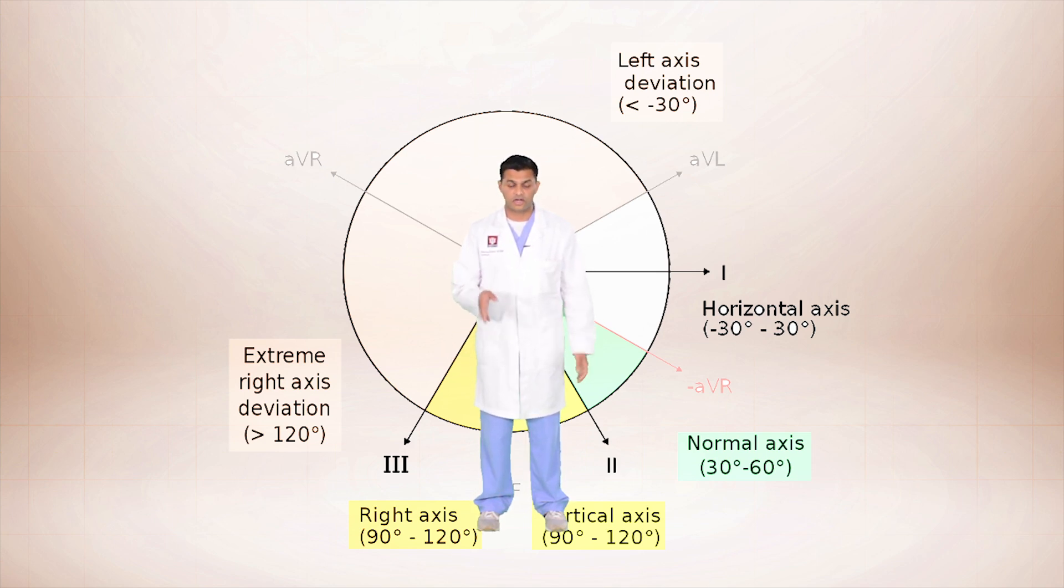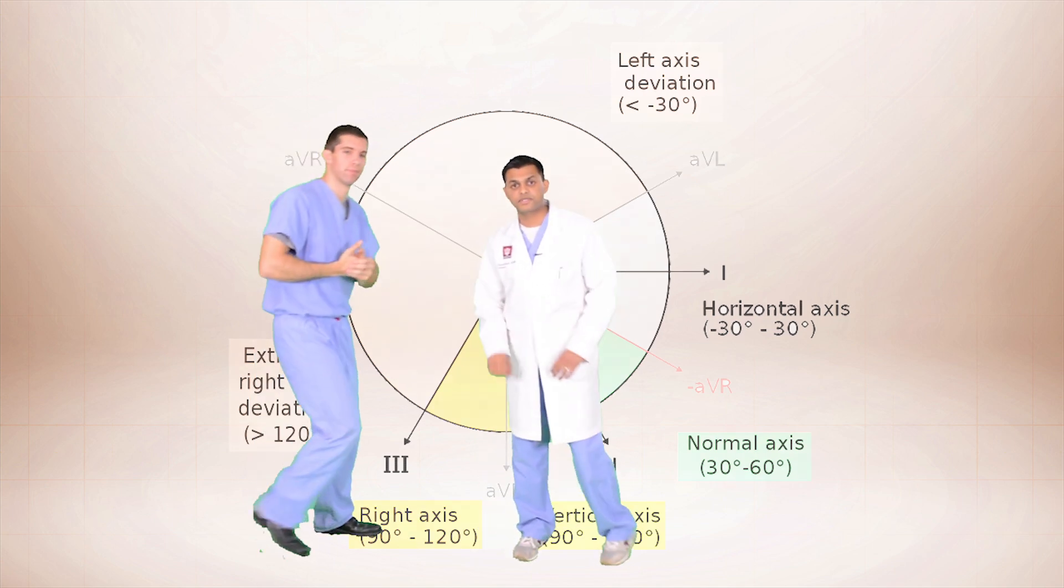Normal hearts are going to be somewhere between 0 degrees and minus 90. Right axis deviation is going to have the flow of the heart between 105 to positive 180 degrees. Left axis deviation is going to be minus 105 degrees to minus 180 degrees. But it can get a little bit complicated. So my friend Mark here has a very simple method that can help explain things.